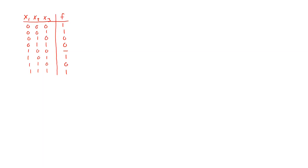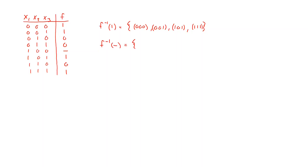We first enumerate the cubes for our onset. These cubes are the set: 0 0 0, 0 0 1, and 1 1 1. This is our set of cubes for the onset of our function. We also write the cubes for the don't care set, which consists of only one cube: 1 0 0. All these cubes correspond to vertices because they only consist of 1s and 0s, and a cube consisting only of 1s and 0s is a vertex.